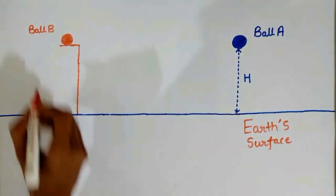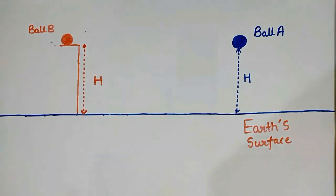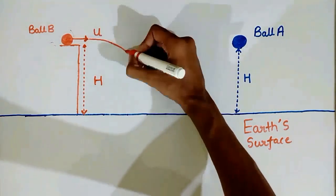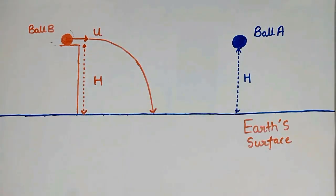Now suppose another ball B at the top of a building of height h. This ball is thrown with some initial velocity u parallel to the earth's surface and this ball follows this trajectory of motion.